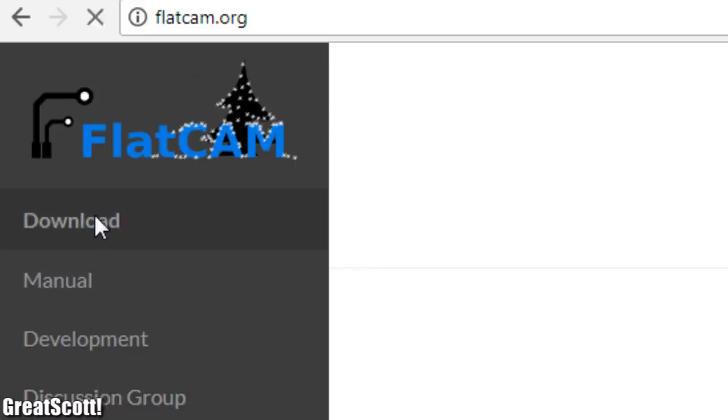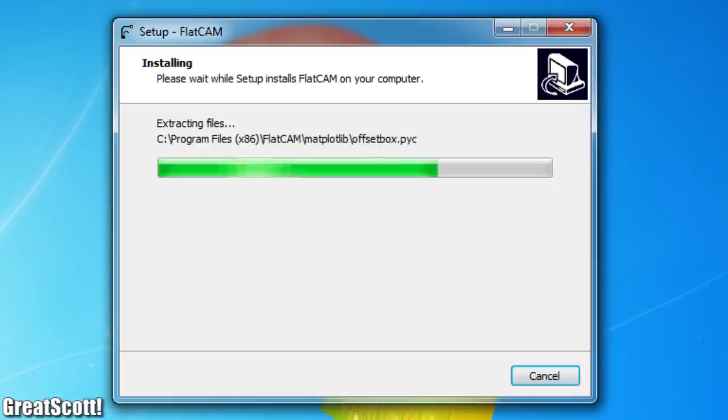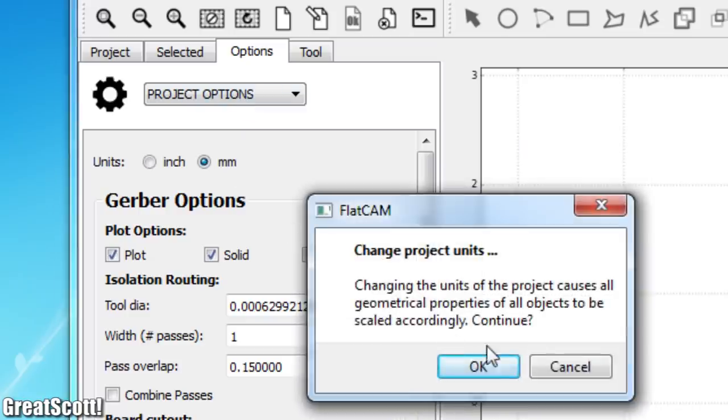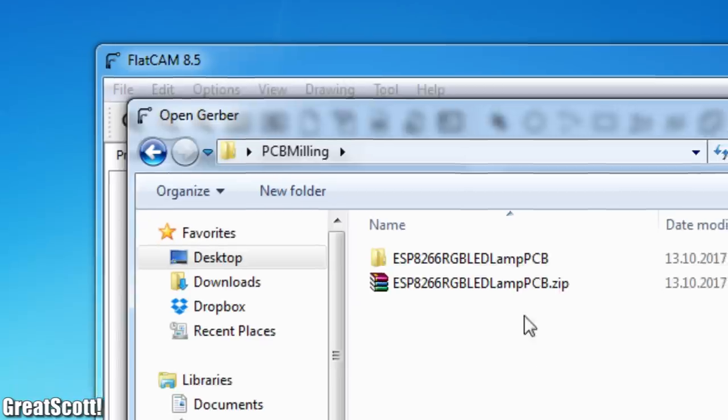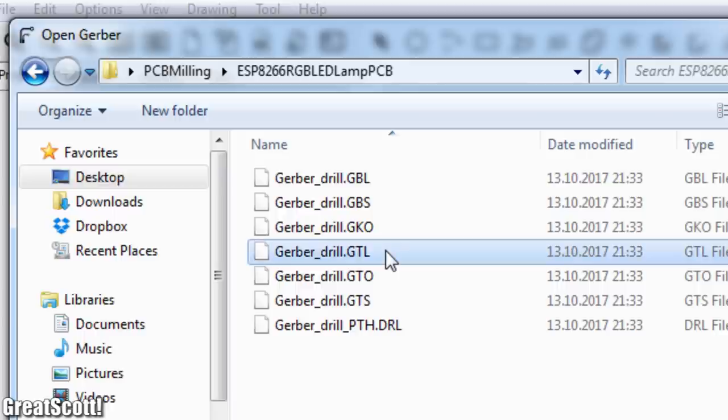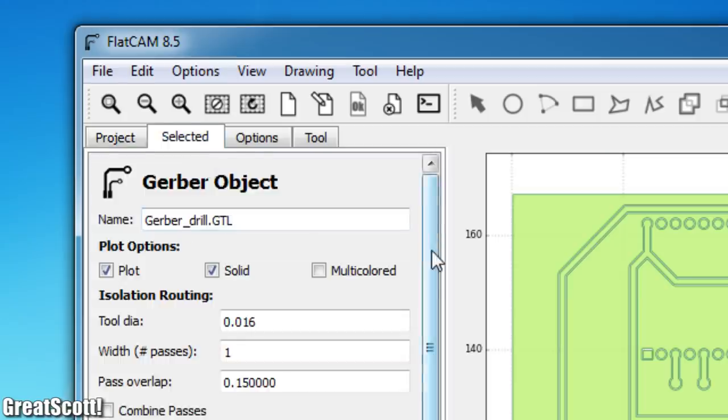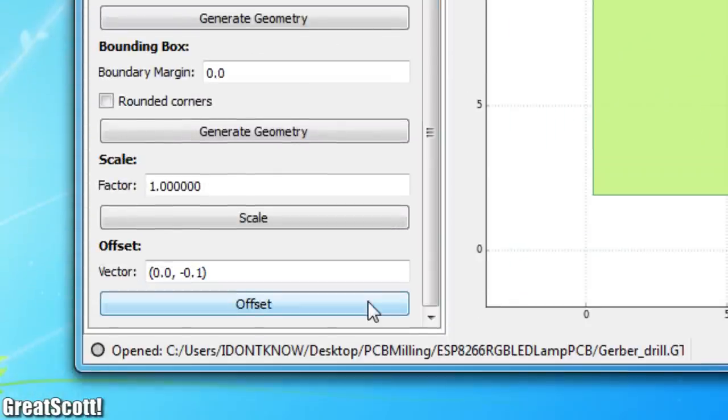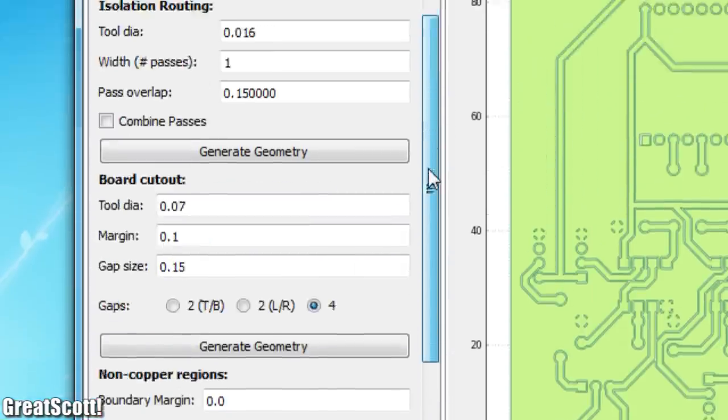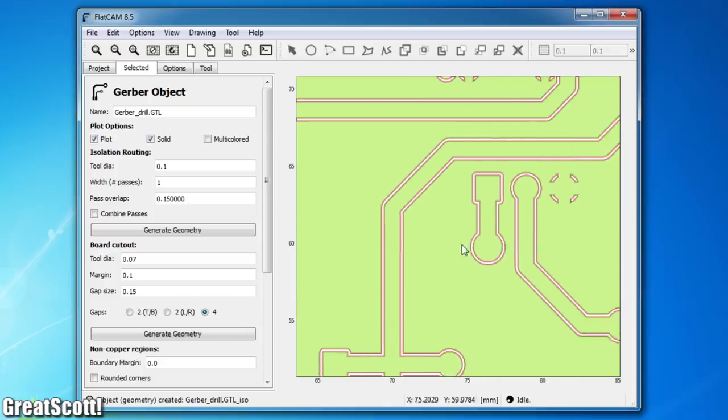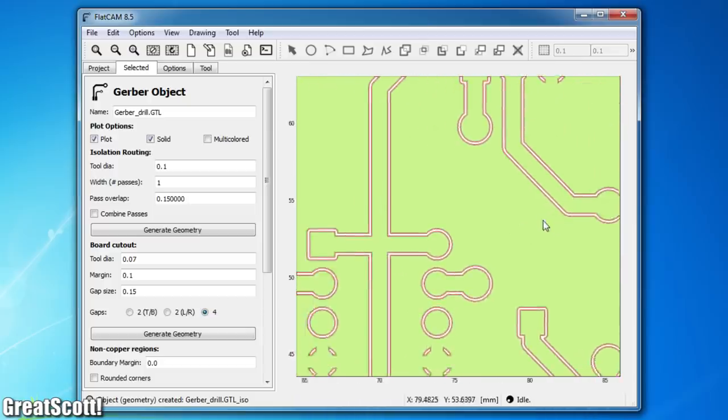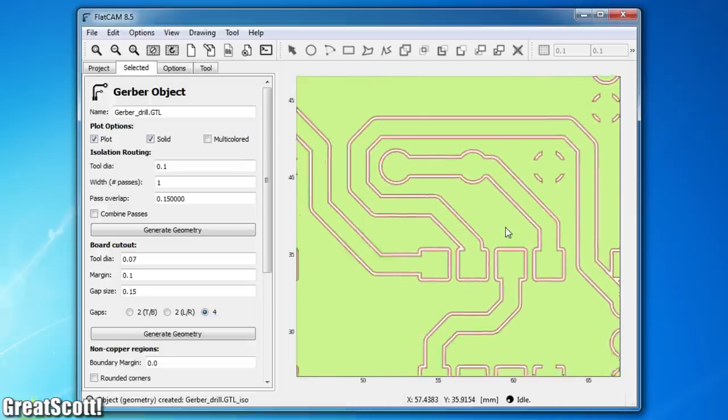Next, I downloaded and installed the software FlatCAM. After starting it, I firstly changed all the units to millimeters and then imported the .gtl file of the Gerber files. Next, I switched to the selected tab, added an offset to the design files so that the board is close to the zero point, changed the tool diameter for the isolation routing to 0.1, and clicked on generate geometry.